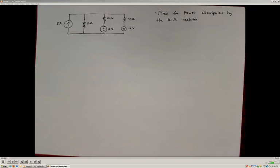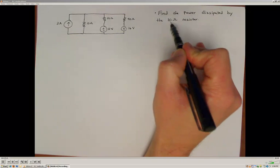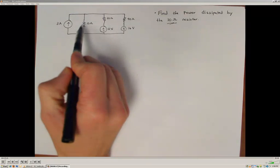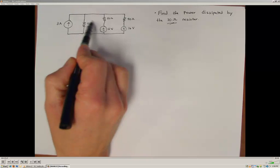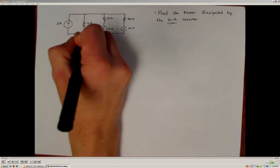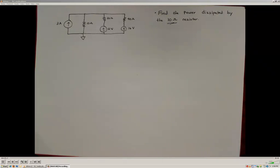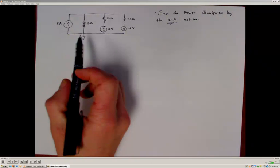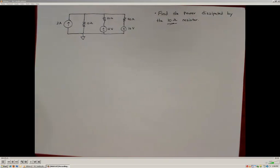The key is to recognize that we do not want to transform the element that is of interest to us. Since we're interested in the power dissipated by the 10 ohm resistor, we want to keep that 10 ohm resistor in place and not change how it is connected. A helpful way to do this is to establish a ground reference node in the circuit, making sure the 10 ohm resistor is always connected to that reference node.